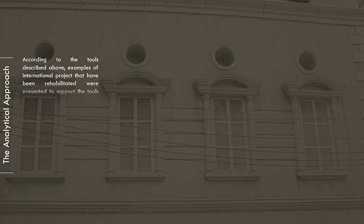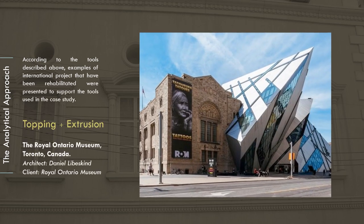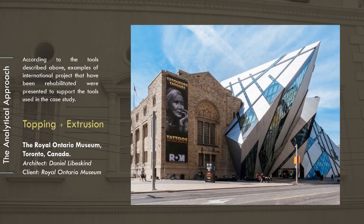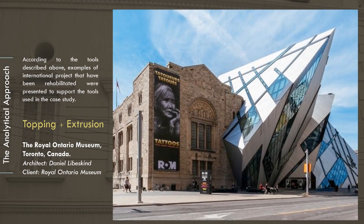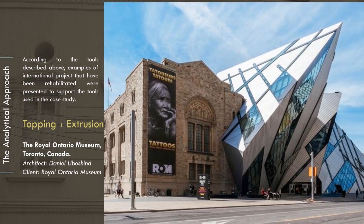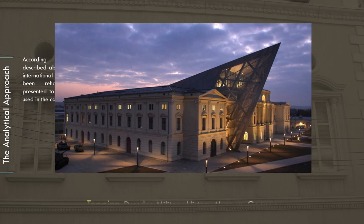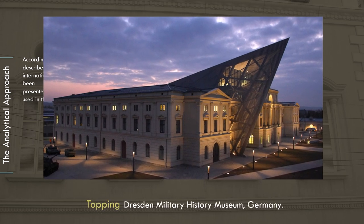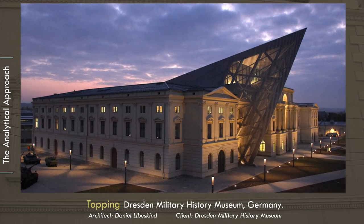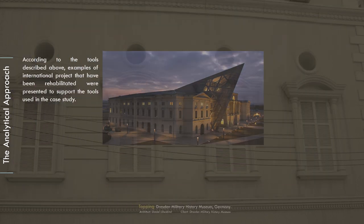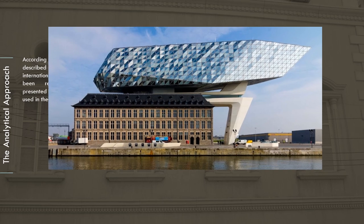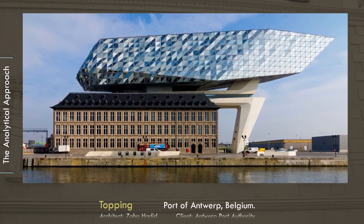According to the rehabilitation tools described, examples of international projects that have been rehabilitated were presented to support the tools used in the case study: the Royal Ontario Museum in Toronto, Canada, by architect Daniel Libeskind; the Dresden Military History Museum in Germany, also by Daniel Libeskind; and the Port of Antwerp in Belgium by architect Zaha Hadid.